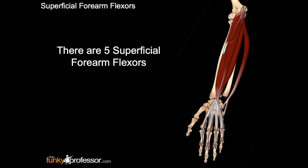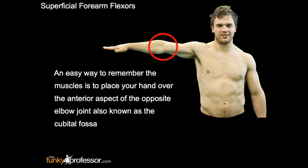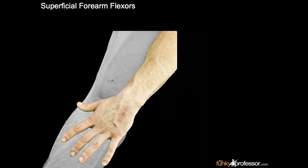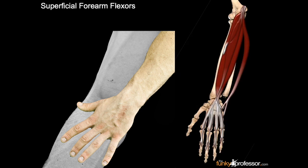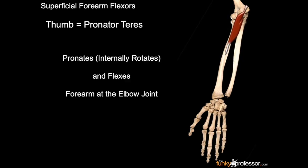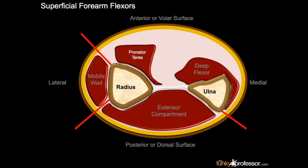There are five superficial forearm flexors. An easy way to remember the muscles is to place your opposite hand over the anterior aspect of the opposite elbow joint, also known as the cubital fossa. Each digit represents a different muscle. The thumb represents pronator teres, which pronates or internally rotates and flexes the forearm at the elbow joint. The pronator teres can be seen closest to the radius.